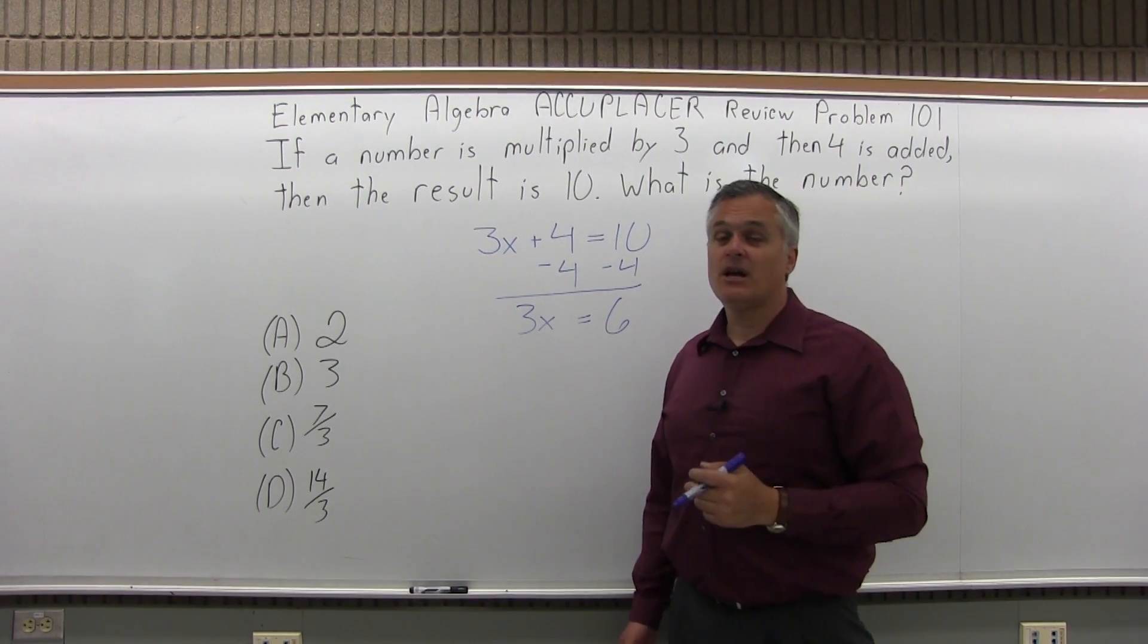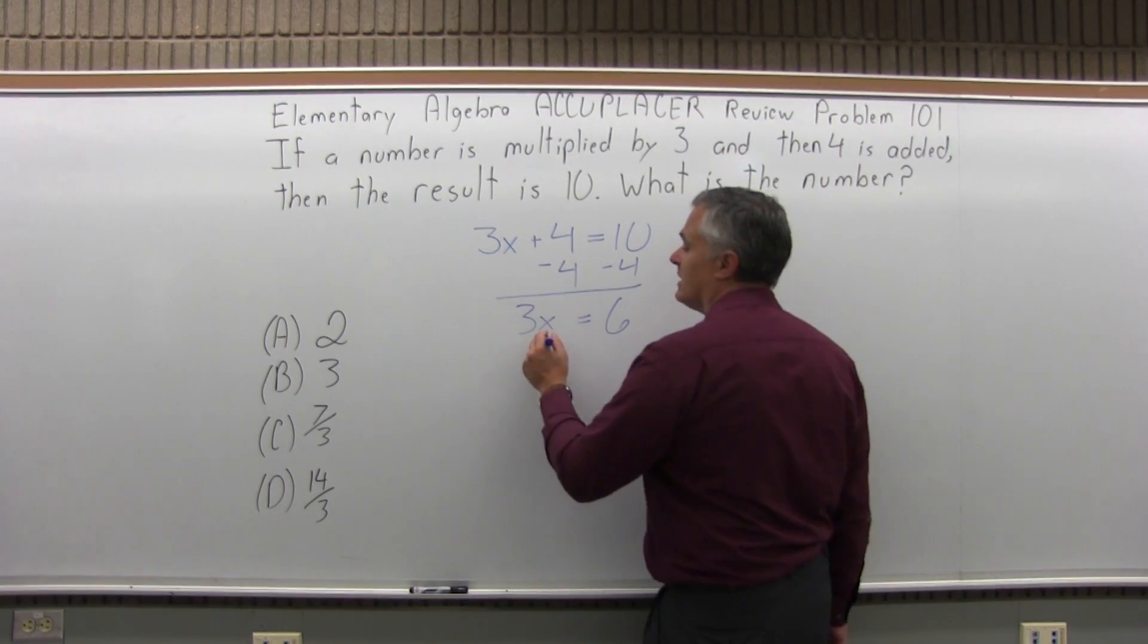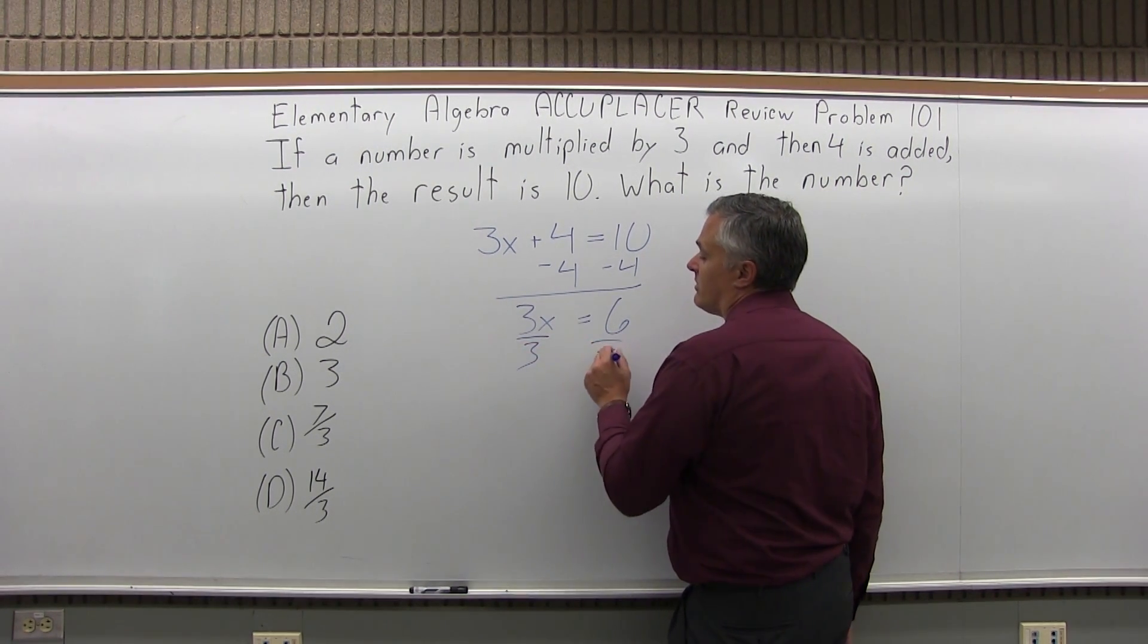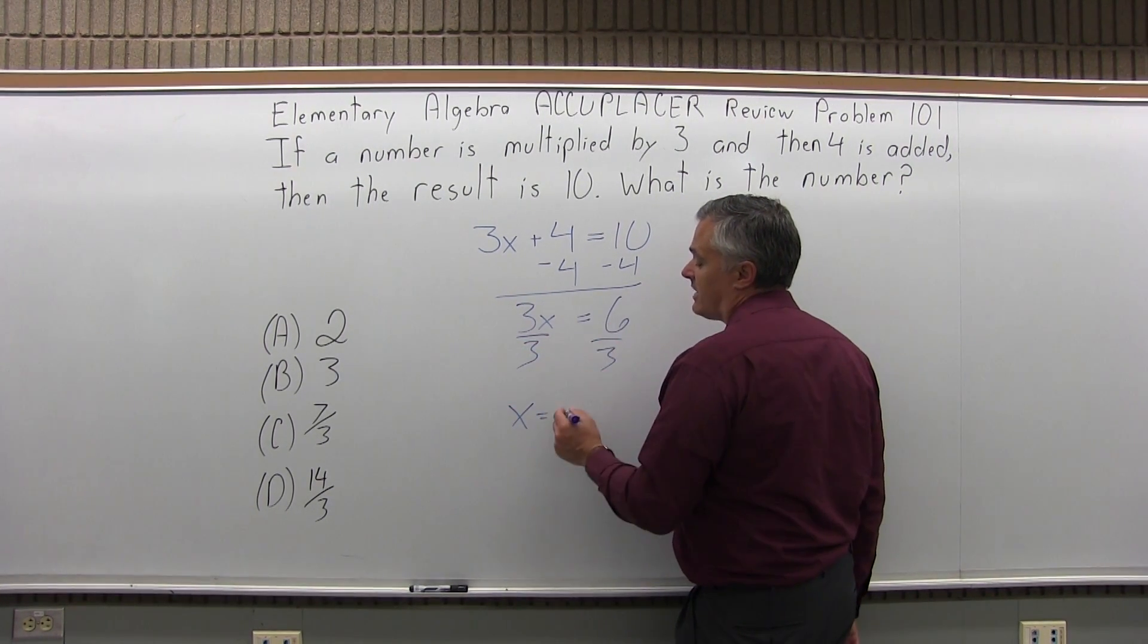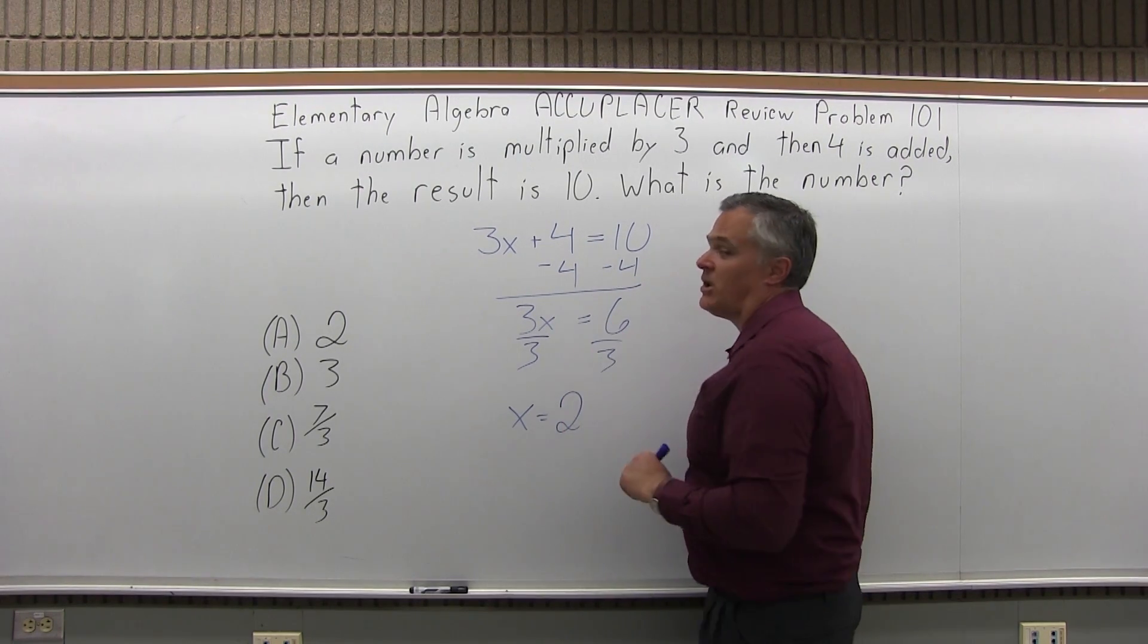I have 3x equals 6 and now you want to divide away the 3. So the left side divided by 3, the right side divided by 3. I have x equals 6 divided by 3 equals 2, positive 2.